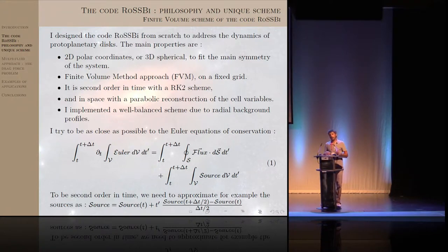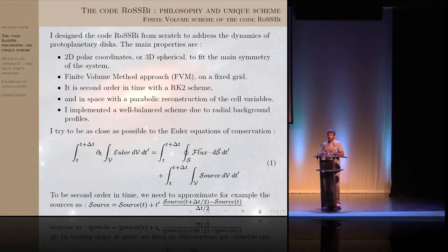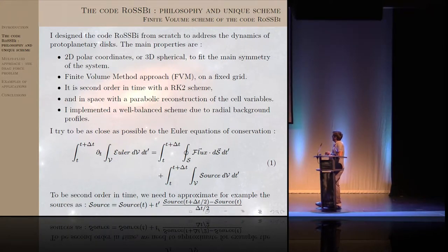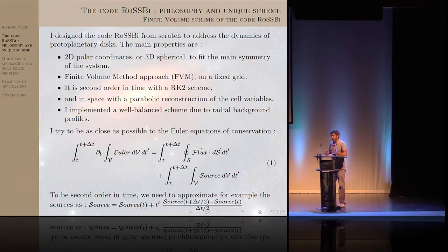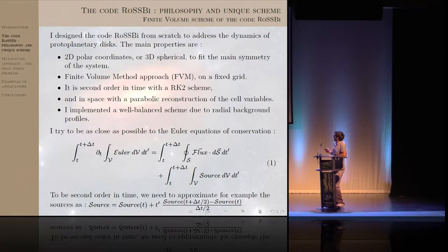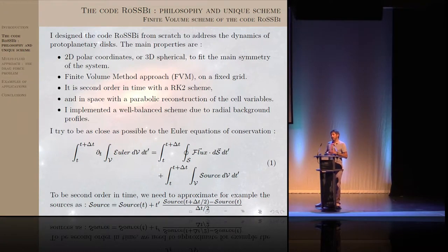It uses a fixed grid with no moving mesh or refinement for the moment, but it's very good for calculations on clusters because it's very well load-balanced. It's second order in time, which is enough to capture shock problems. In space, we use parabolic reconstruction of the cell structures to find the fluxes, something similar to but a bit simpler than what the second speaker uses. We have also implemented a well-balanced scheme that reduces the numerical errors induced by the radial profile of the disk.